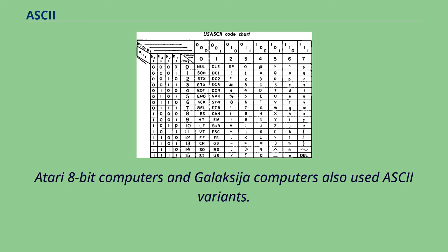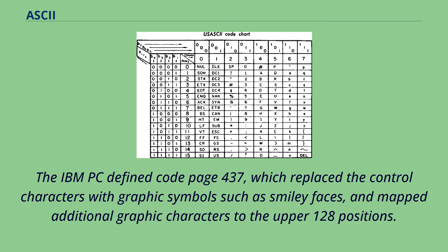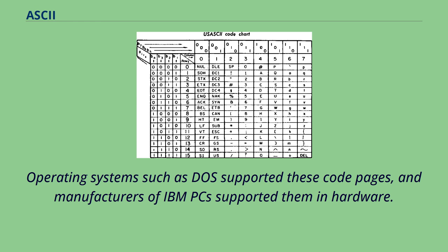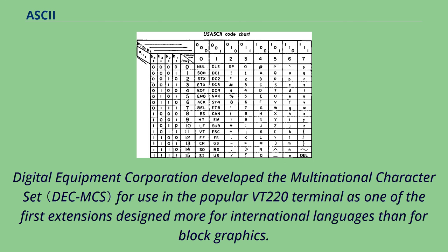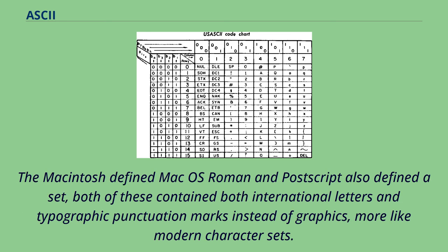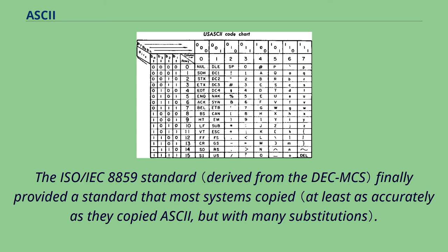Atari 8-bit computers also used ASCII variants. The IBM PC defined code page 437, which replaced the control characters with graphic symbols such as smiley faces, and mapped additional graphic characters to the upper 128 positions. Operating systems such as DOS supported these code pages, and manufacturers of IBM PCs supported them in hardware. Digital Equipment Corporation developed the multinational character set for use in the popular VT-220 terminal as one of the first extensions designed more for international languages than for block graphics. The Macintosh-defined Mac OS Roman and PostScript also defined a set, both containing international letters and typographic punctuation marks instead of graphics. The ISO/IEC 8859 standard finally provided a standard that most systems copied.